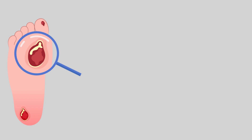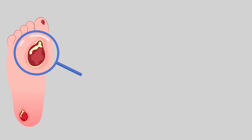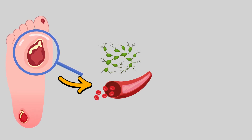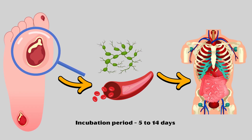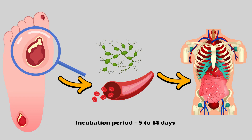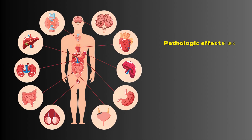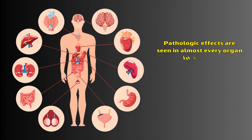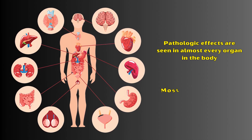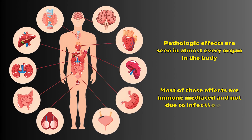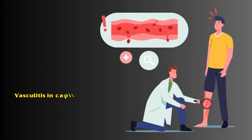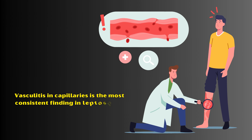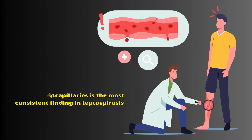Upon entry to the body, the organisms gain rapid access to the bloodstream through lymphatics and spread to the organs in the body. The incubation period is usually 5 to 14 days. Pathologic effects are seen in almost every organ in the body, and most of these effects are immune-mediated and not due to infection itself.